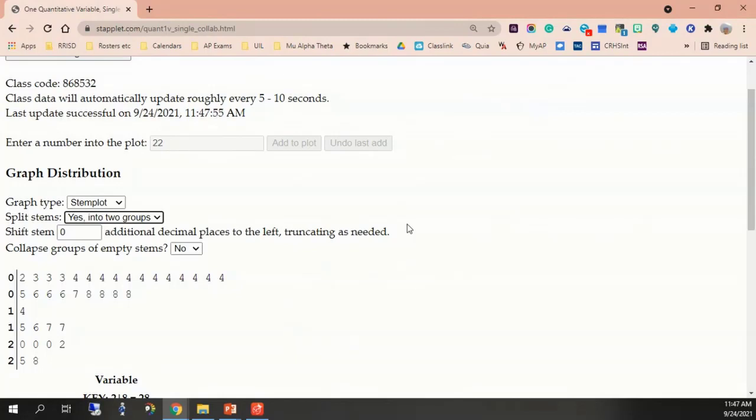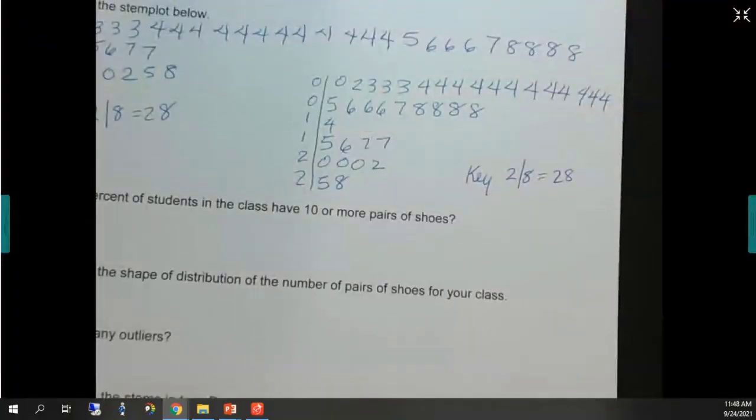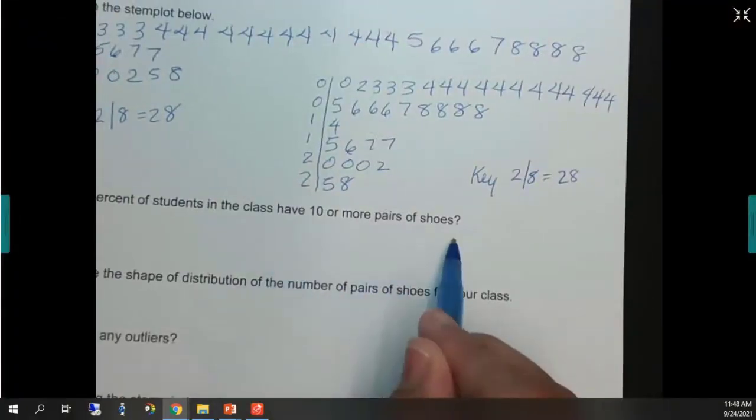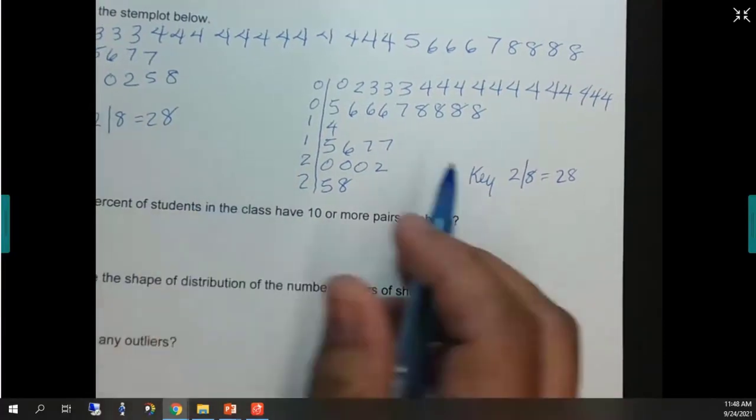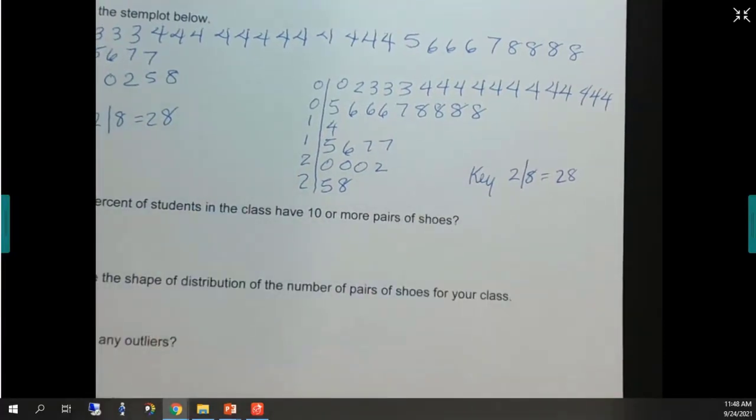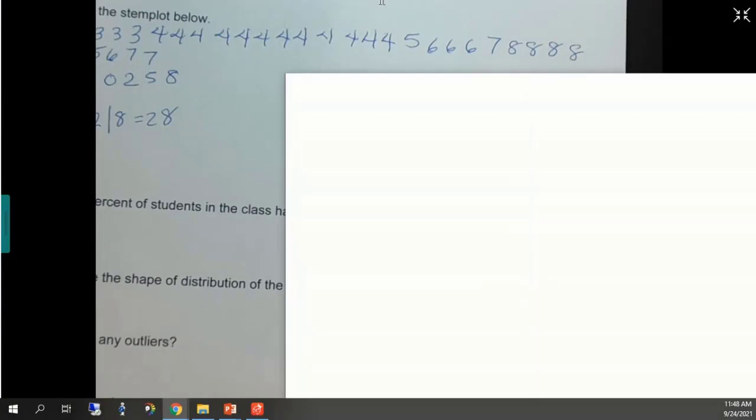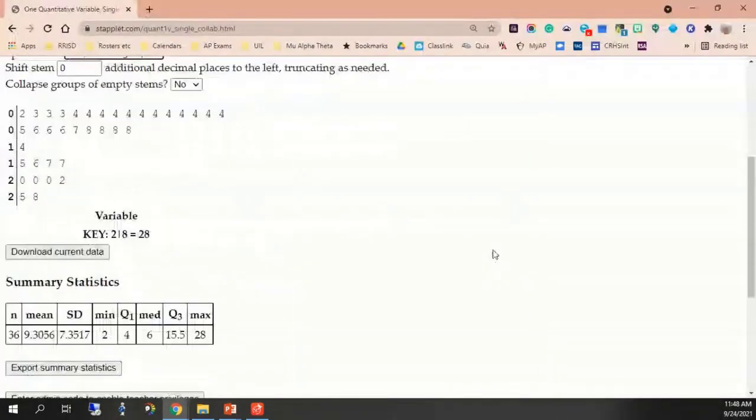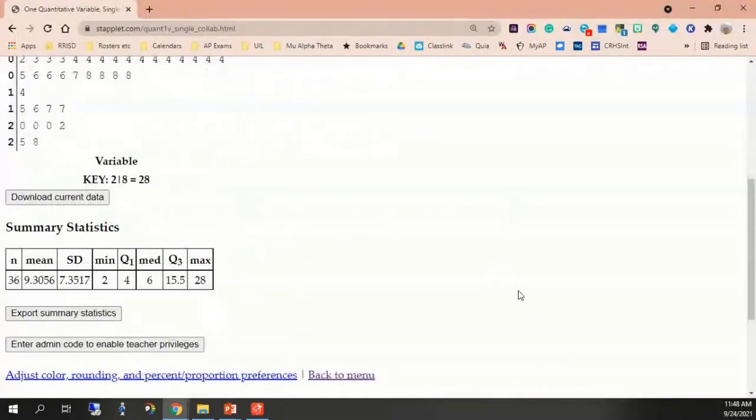Okay, so the question we're going to ask is. What percent of the students in class have 10 or more shoes? Now, if you're looking at the staplet, how many data points? We know some people answered more than once. Why do we know? If you go to summary here, what is n?